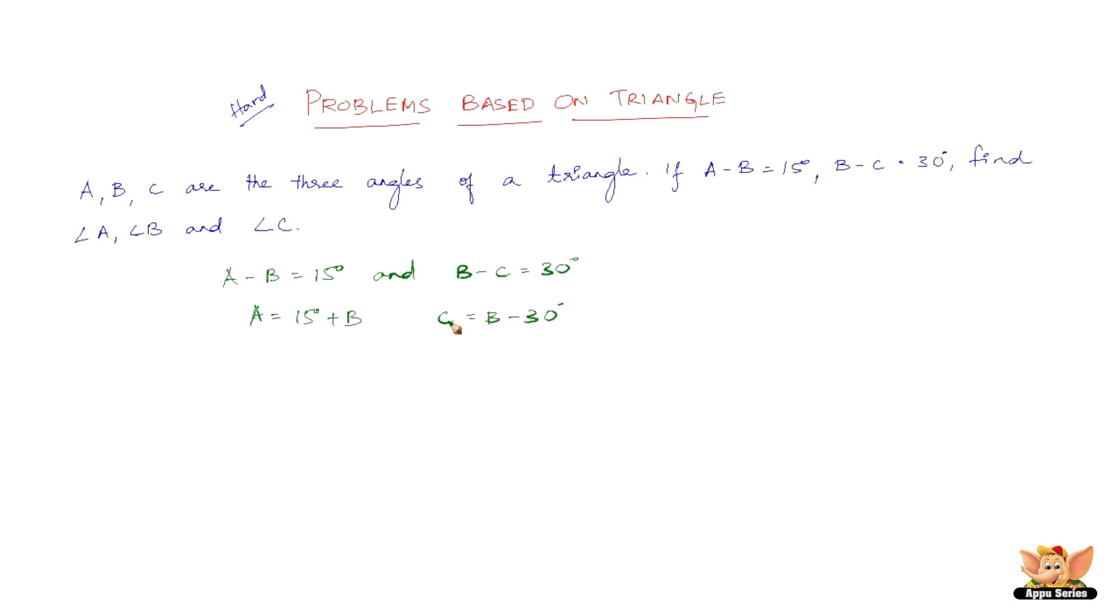Basically, if you notice carefully, this is a very easy step. Now we have the basic concept: A plus B plus C equals 180 degrees. So we have A as 15 degrees plus B, we have B as just B, and we have C as B minus 30. Now why did we do this? Just to convert everything to one alphabet. You can either do B or you can do it into C or you can do it into A.